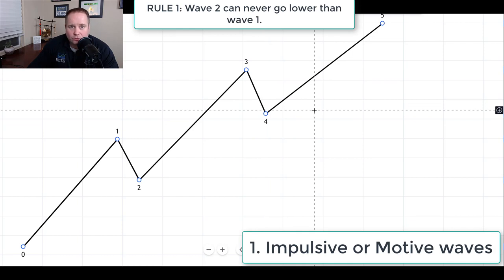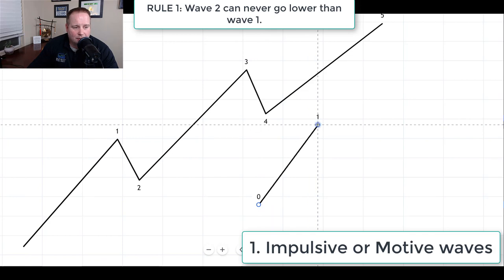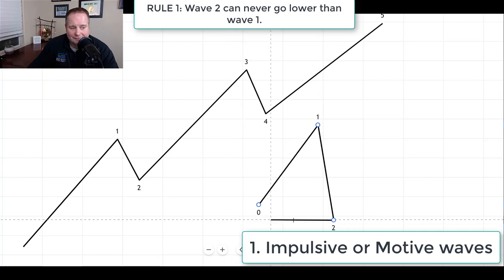Now there are some cardinal rules to impulsive waves. The first rule is that wave two can never be lower than wave one. So if you have wave one up, your wave two can never come back down lower than the start of wave one. This is not a valid Elliott wave, as wave two has now gone lower than wave one.